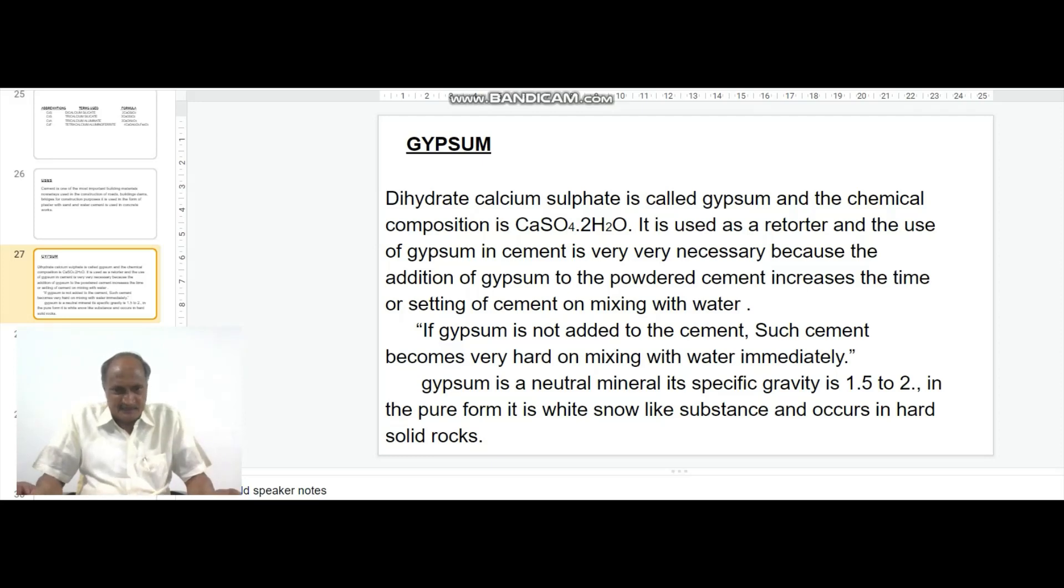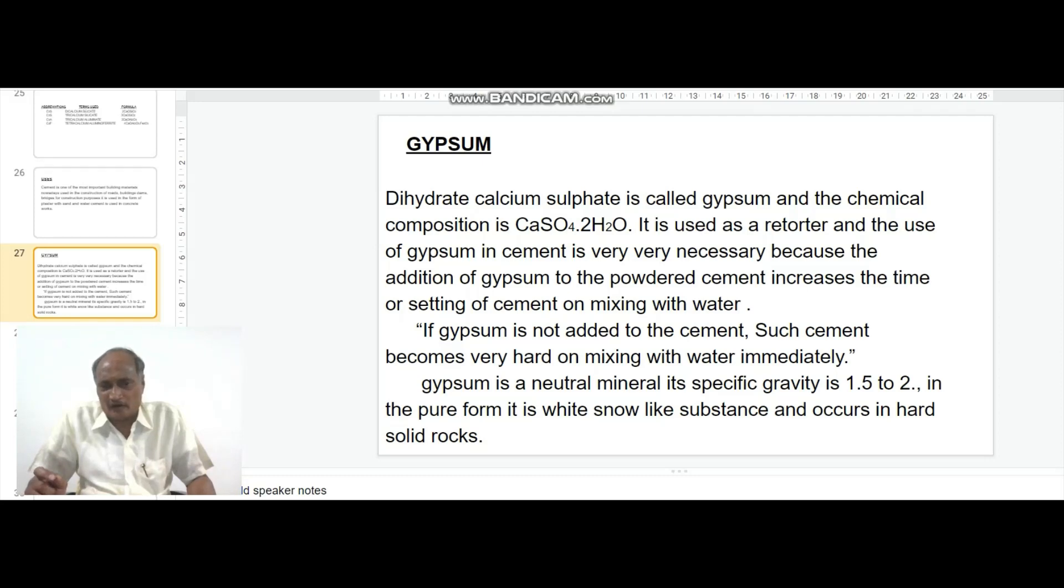Gypsum is a neutral mineral. Its specific gravity is 1.5 to 2. In pure form, it is white, snow-like substance, and it occurs in hard, solid rocks.